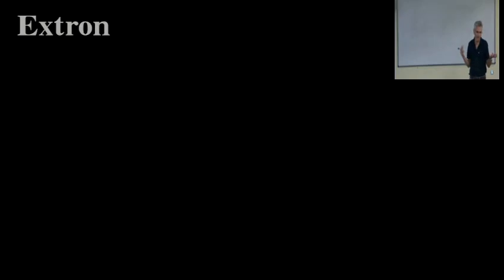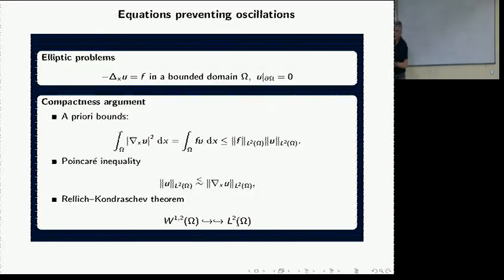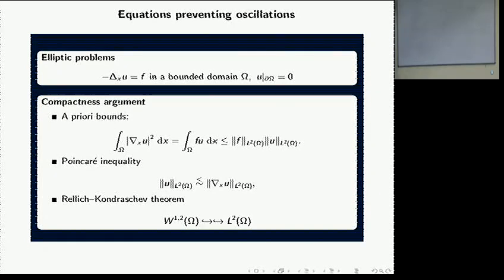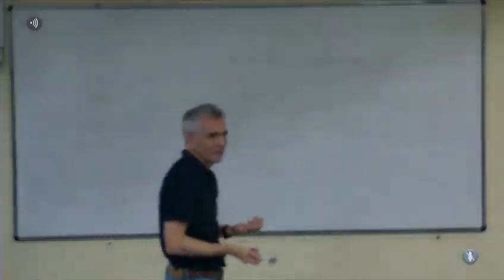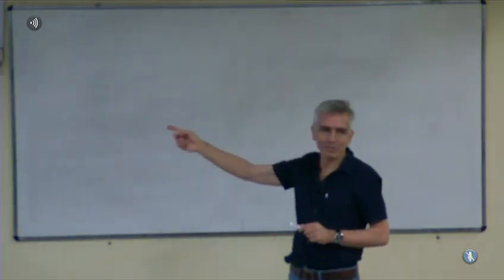Everything is very high-level, very elementary. The first example where we don't see oscillations is elliptic problems. The iconic example of the so-called elliptic problem — why elliptic? Because if you write down this linear equation, the Laplacian of U equals F on a bounded domain with boundary conditions. That's something taught in Prague in an amazing course. Students know a lot about this problem, but much less about Euler.